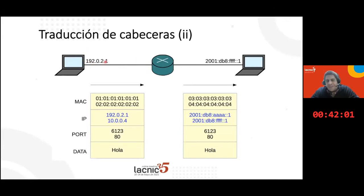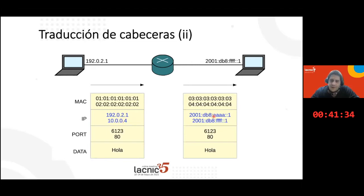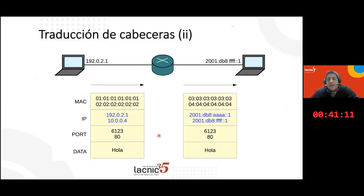On the left we have an IPv4-only network, and on the right an IPv6 network. At the IP level the translator maps the source and destination addresses between protocols. This translator takes the IPv4 header and translates it into IPv6, and the other way back, just as NAT would operate. The port also has to be translated, while the data payload is left as is.